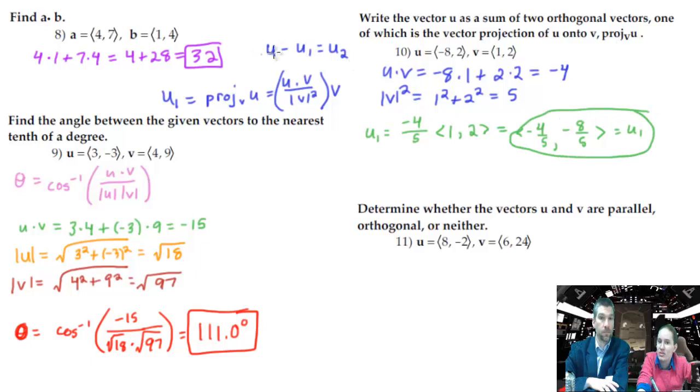And then to find the other u, we have to do our original u minus what we just found. So, our original u is negative eight comma two. We're going to subtract negative four-fifths comma negative eight-fifths. And that's going to give us what u2 is. Now, if we're going to do this with fractions, we do need to find common denominators for these. These need to be over five. So, this is negative forty over five and ten over five. And then when we subtract, we could do plus plus plus, because we're distributing the negative into both of these. So, that's going to give us negative thirty-six-fifths and then ten plus eight is eighteen-fifths. So, there you go. That's u2.